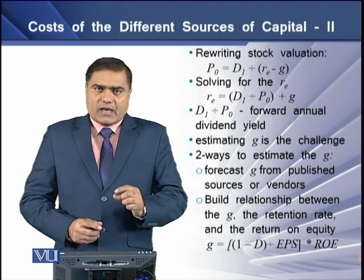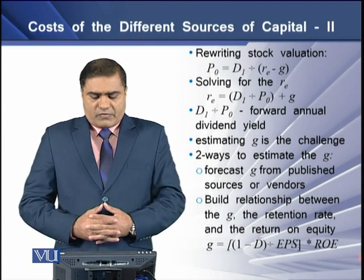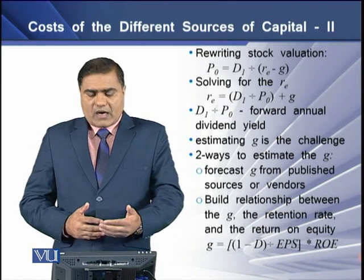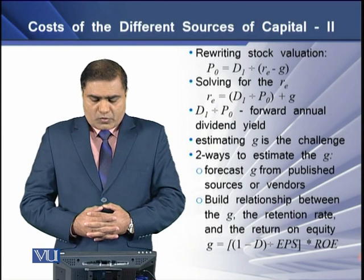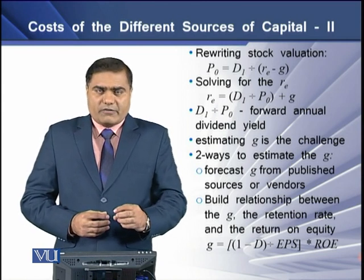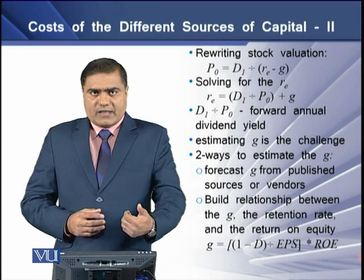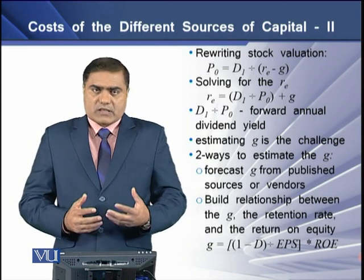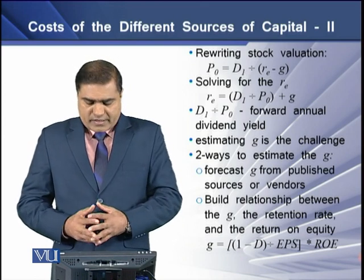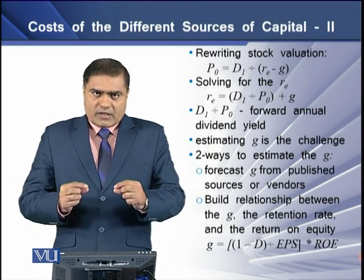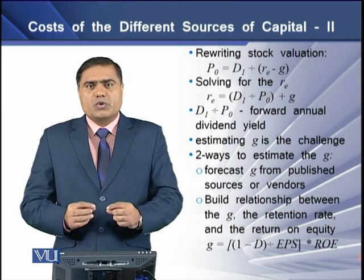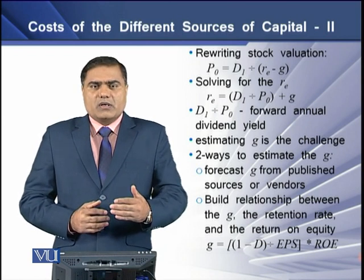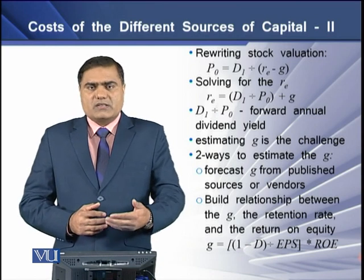To determine RE, we rearrange the dividend discount model: P0 equals D1 divided by (RE minus G). Solving for RE, we divide the expected dividend by the current price and add the growth rate G. So the cost of equity RE equals dividend yield plus the growth rate G. Note that here G does not mean the growth rate in dividends — rather, G is the growth in the company's earnings, the earnings growth rate.